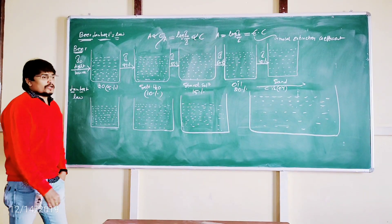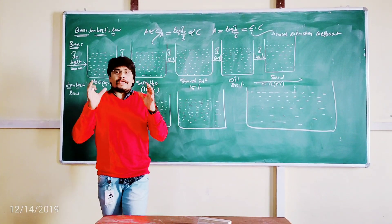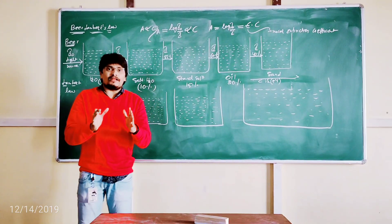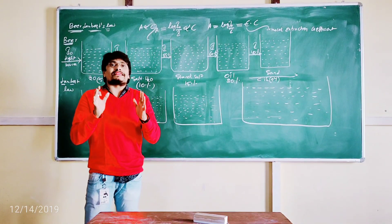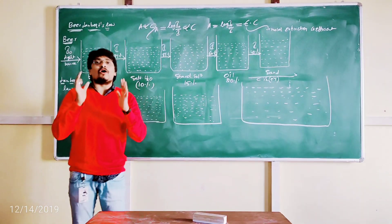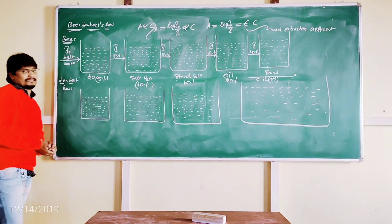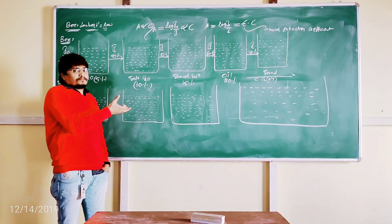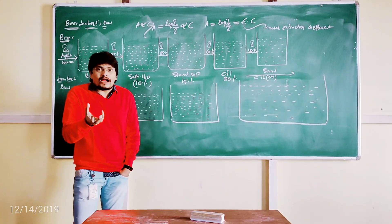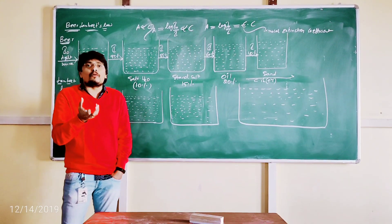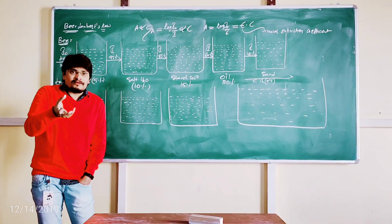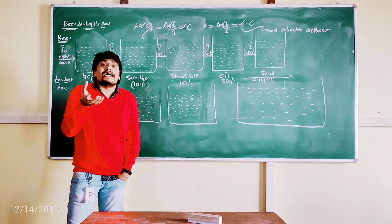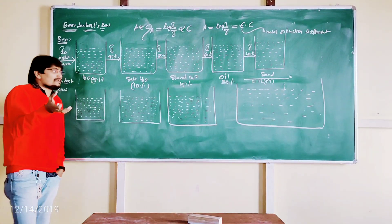Now coming to Lambert's Law. Lambert's Law states that whenever a beam of monochromatic light is passed through a sample, the absorption of the light by the sample is directly proportional to the path length or thickness of the absorbing medium. The absorbing medium here is the container in which we are placing the sample.